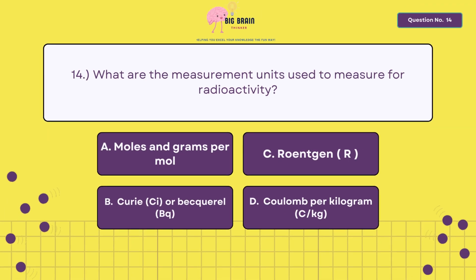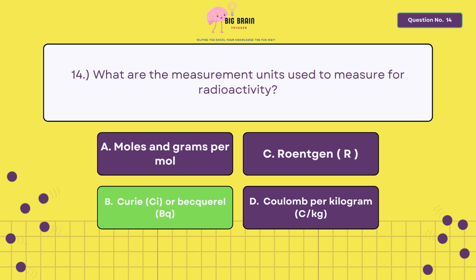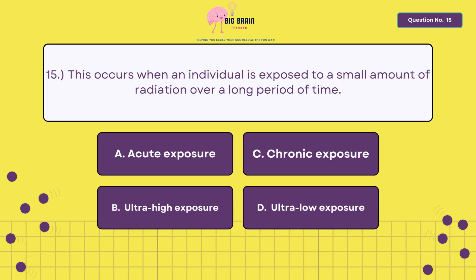Fourteen, what are the measurement units used to measure for radioactivity? The answer is letter B, curie or becquerel.